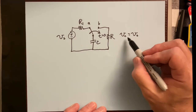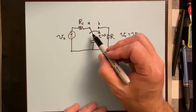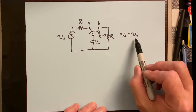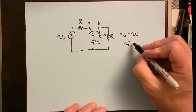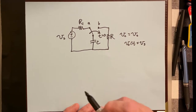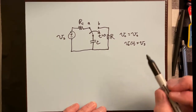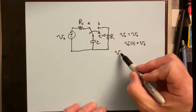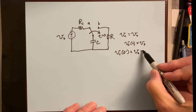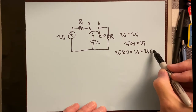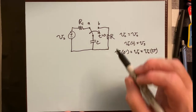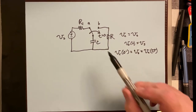If we flip the switch after it's been in position A for a very long time, the voltage on the capacitor at t=0 equals V_S. As a reminder, the voltage on a capacitor cannot change instantaneously, so the voltage just before zero equals V_S and also equals the voltage just after zero. That gives us our initial condition.